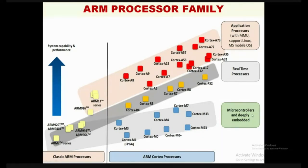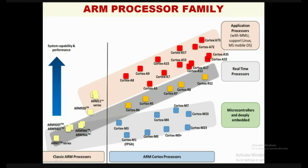ARM broadly differentiates into classical ARM processors and ARM Cortex processors. In the ARM Cortex series, we have Application processors, Real-time processors, and Microcontroller processors. Application processors sit inside the Qualcomm Snapdragon, used in mobile applications and multimedia applications — CCTV cameras, IP cameras, television receivers, wherever there is display, audio, video, or battery-operated applications. The ARM Cortex-A series starts from Cortex-A5, A7, A8, A9, going up to Cortex-A73.